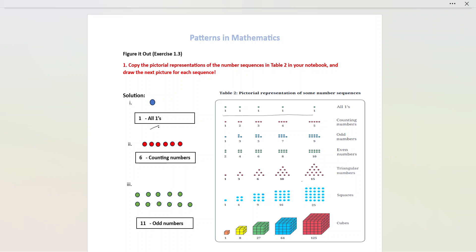Next: 1, 2, 3, 4, 5 — what is the next counting number? 6. So the pictorial representation is 6 circles. Next, 1, 3, 5, 7, 9 — these are the sequence of odd numbers. The next odd number after 9 is 11. So the pictorial representation is 6 plus 5, giving 11.